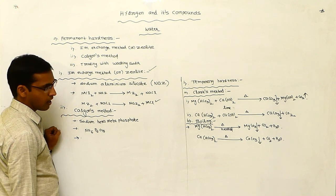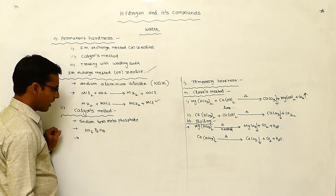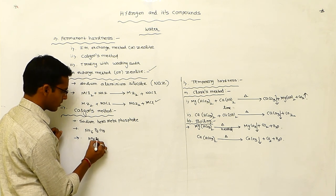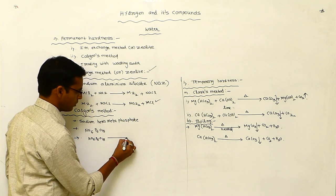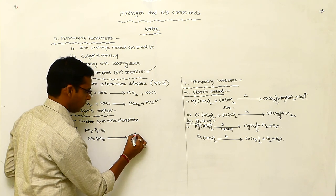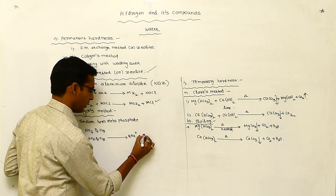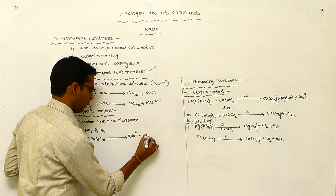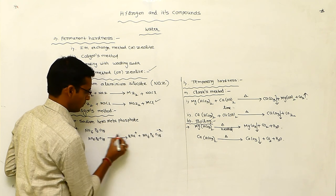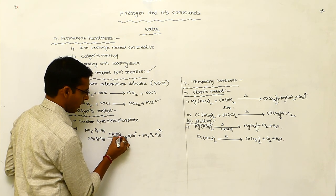Calgon reacts with sodium metal — Na₆P₆O₁₈. During electrolysis or heating, it is converted: two Na⁺ ions are released, and the remaining ion is Na₄P₆O₁₈²⁻.